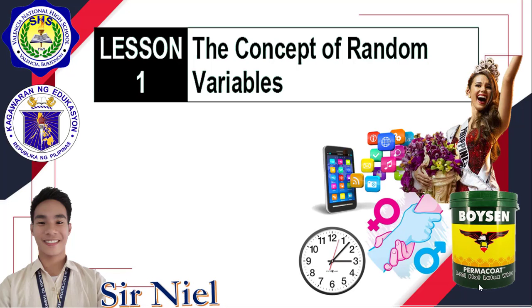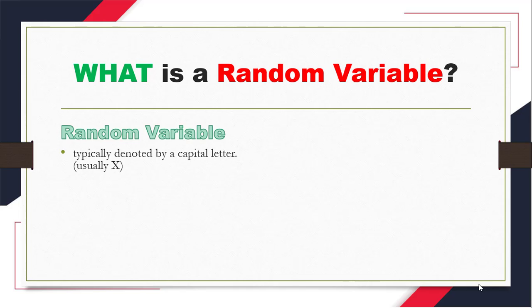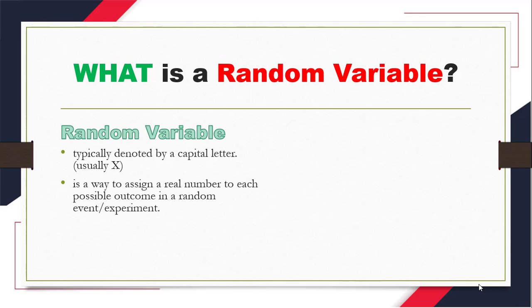Now, are you ready to learn? So, let us go straight to our biggest question and that is: What is a random variable? A random variable is typically denoted by a capital letter, usually X, and it is a way to assign a real number to each possible outcome in a random event or experiment.